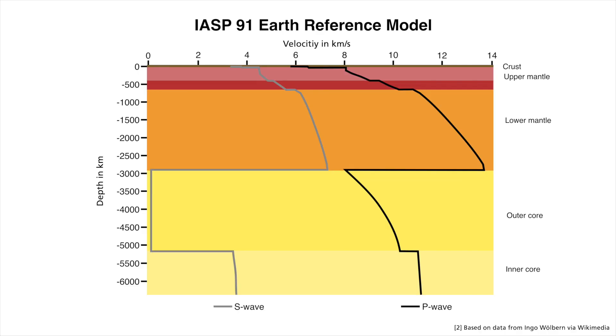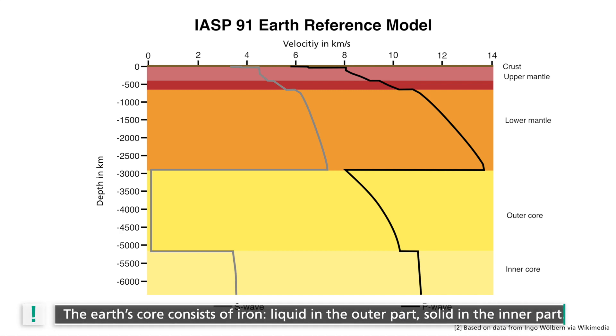At the core-mantle boundary, the P-wave velocity decreases and the velocity of S-waves drops to zero. This is because the outer core consists primarily of molten iron due to the high temperatures, which has no restoring forces in case of shearing. Hence, shear waves cannot travel through it.